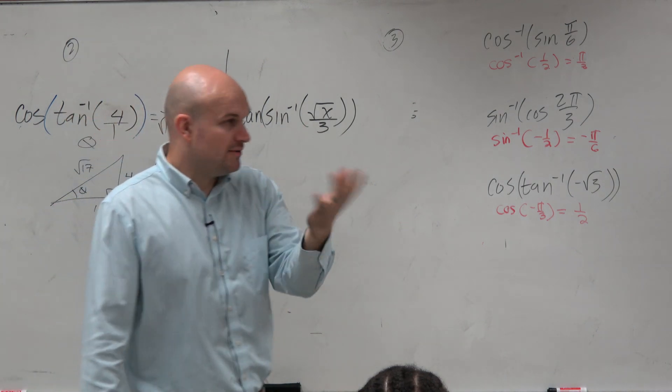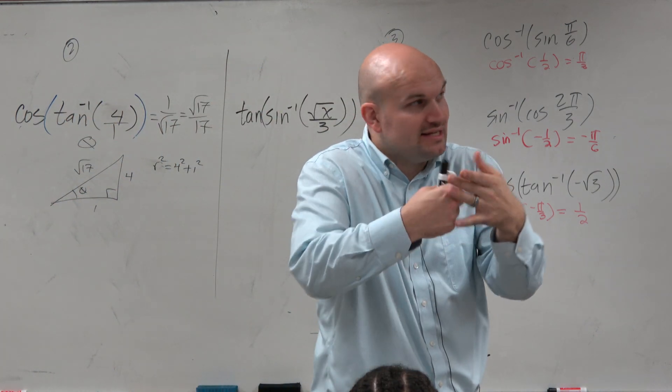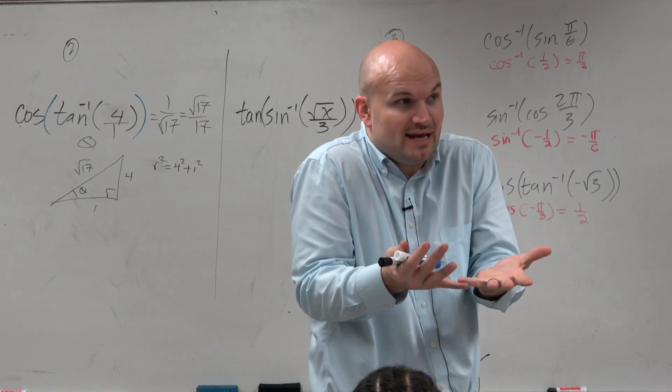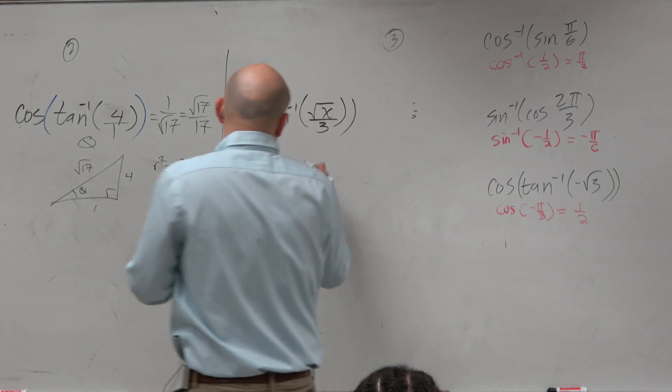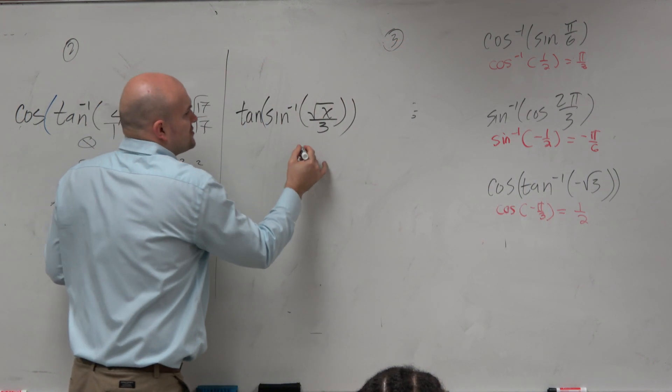Same idea, now we have the sine inverse. And again, if we're going to take the sine inverse of something, we're looking for whatever that angle is. So now, what do we want to represent this angle? Let's call this one alpha.